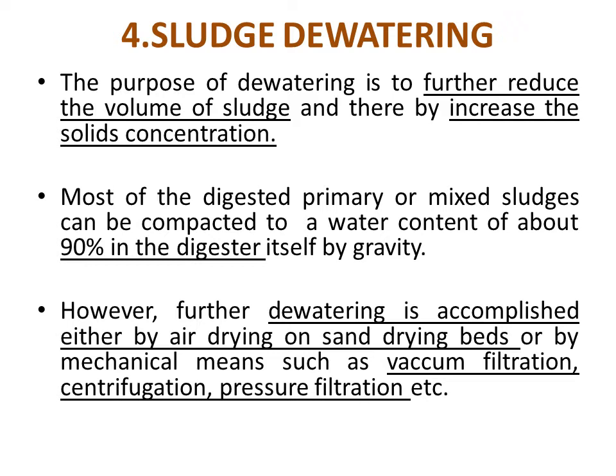Further de-watering is accomplished either by air drying on sand drying beds or by mechanical means such as vacuum filtration, centrifugation, or pressure filtration. The de-watering of concentrated sludge is commonly done by a continuous centrifugal process. In this process, the outer casing of a centrifuge contains a revolving solid bowl with a screw conveyor rotating at a slow speed. Sludge enters through the hub of the conveyor, and centrifugal force causes the solids to deposit on the walls of the bowl, from where they can be removed.